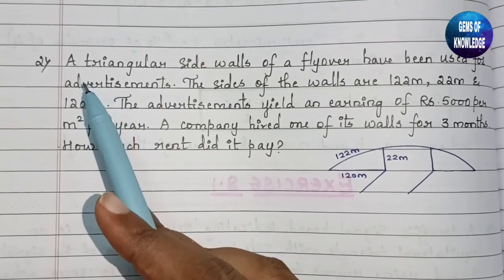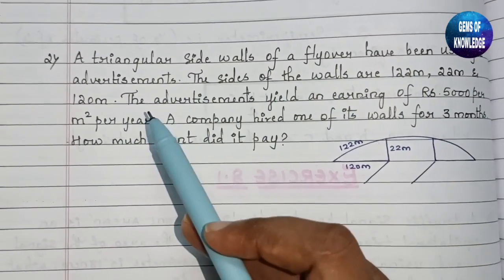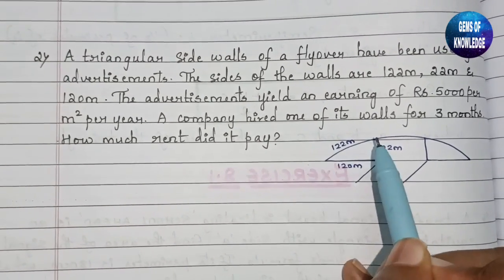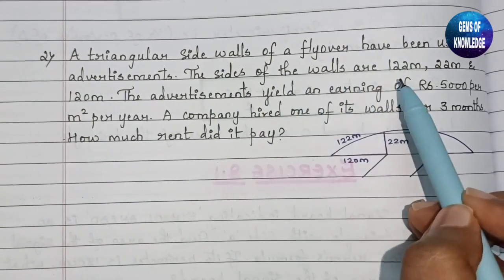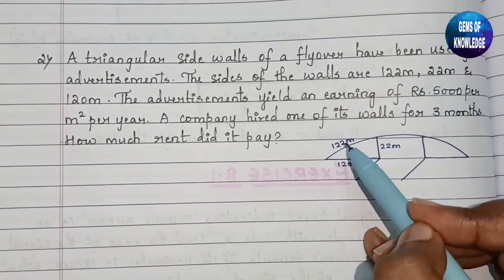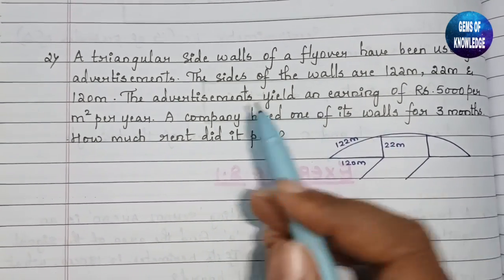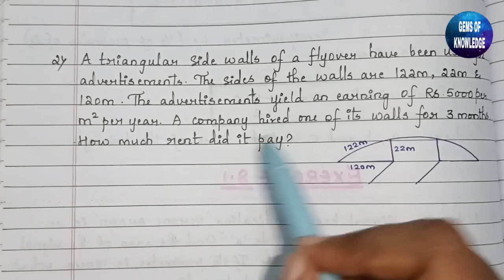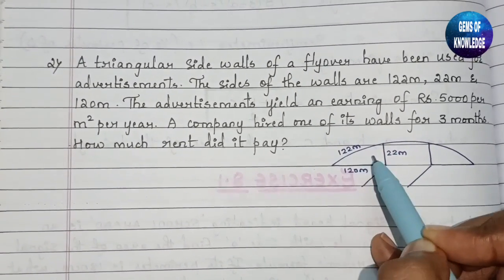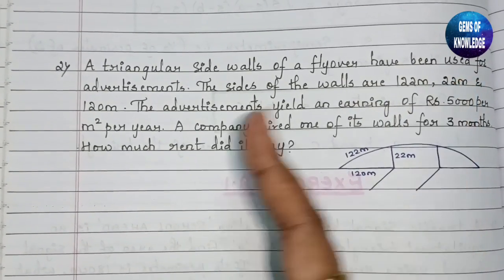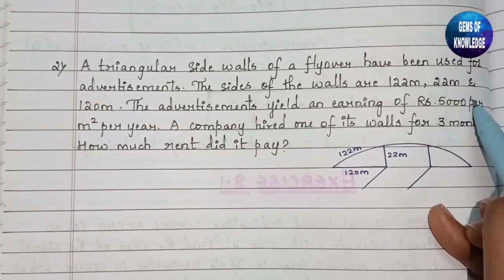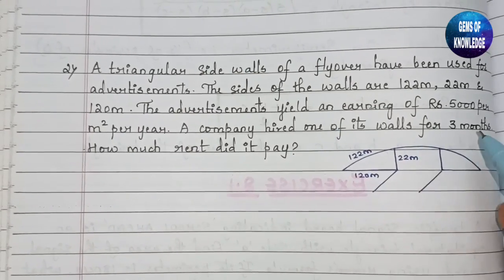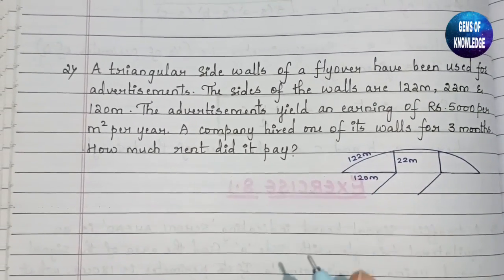Moving to the second question: a triangular side wall of a flyover has been used for advertisement. The sides of the wall are 122 meters, 22 meters, and 120 meters. The advertisement yields an earning of rupees 5000 per meter square per year. A company hires one of its walls for three months — how much rent does the company have to pay?